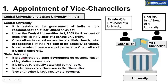State universities are established by the state governments on recommendation of state legislative assemblies, and are partially funded by the state government and partially by the central government. State universities ke andar jo respective state governor hote hain, he or she holds the post of chancellor. For example, Assam mein state universities ke chancellor hain Governor Professor Jagdish Mukhi sahab. Vice chancellor is appointed by the governor — so in a state university, chancellor is the governor of that state, while vice chancellor is appointed by the governor.